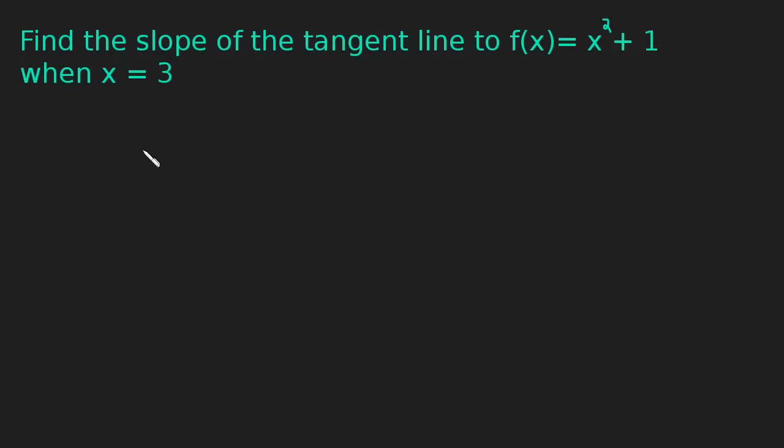In this problem, we're being asked to find the slope of the tangent line to the function f of x equals x squared plus 1 when x equals 3. So we know the derivative tells us the slope of the tangent line, so that's a good place to start.